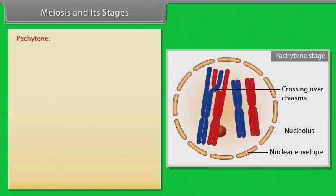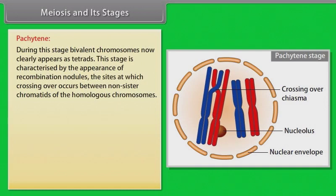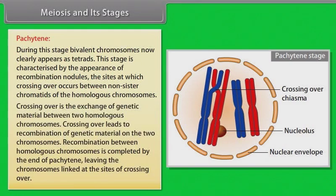The next stage, pachytene, is comparatively longer than previous two stages. During pachytene stage, bivalent chromosomes now clearly appear as tetrads. This stage is characterized by the appearance of recombination nodules, the sites at which crossing over occurs between non-sister chromatids of the homologous chromosomes. Crossing over is the exchange of genetic material between two homologous chromosomes. Recombination between homologous chromosomes is completed by the end of pachytene, leaving the chromosomes linked at the sites of crossing over.